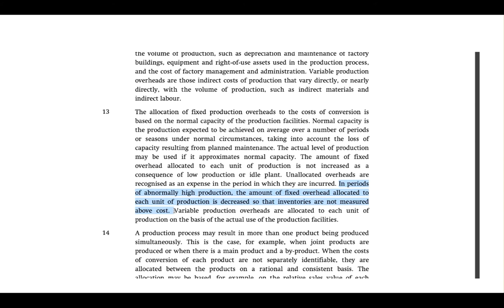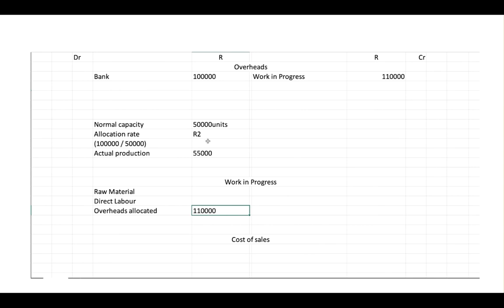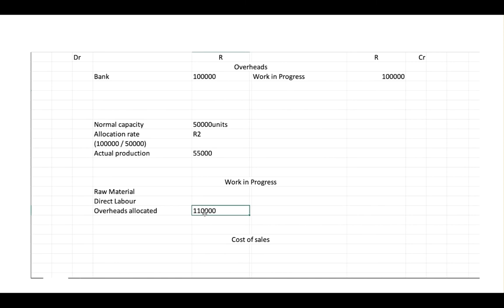They decrease it so that inventories are not measured above their costs. So we can't allocate more than what the cost was. Strictly speaking you'd calculate a new rate: 100,000 divided by 55,000 units and use that to allocate. But the shortcut: we know it's never above costs, so if production is materially higher, just allocate what was actually spent - then there are no unders or overs, nobody has a heart attack. If it's only a little bit higher that's okay, but as soon as the difference becomes a big number just allocate what was incurred.